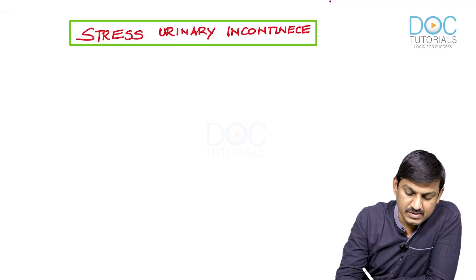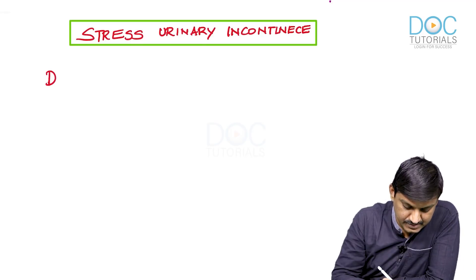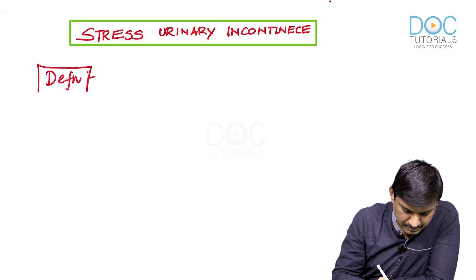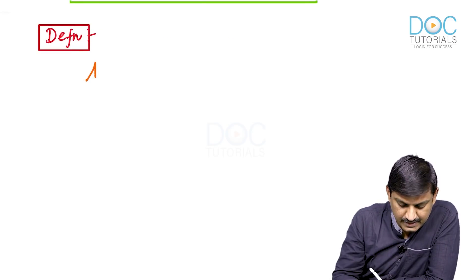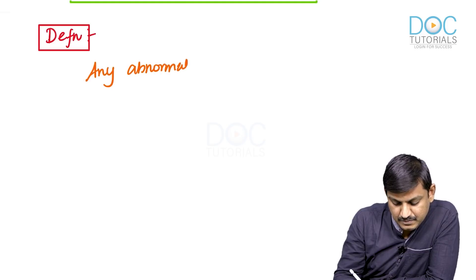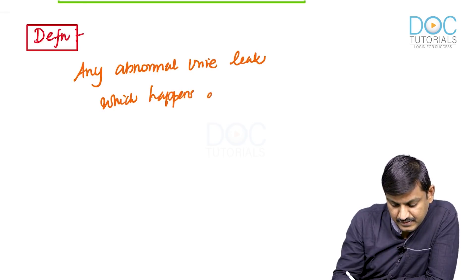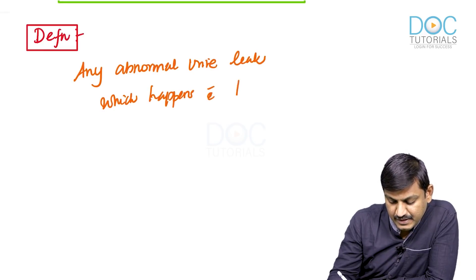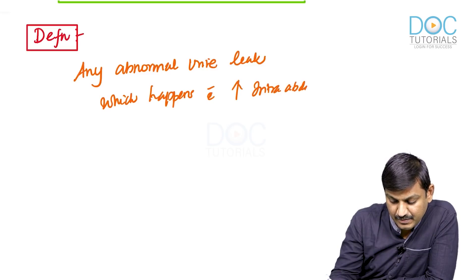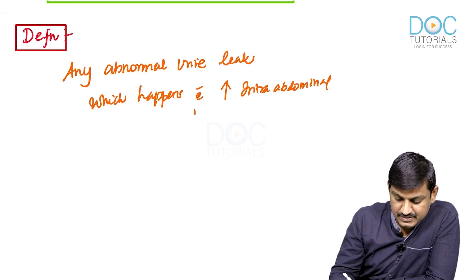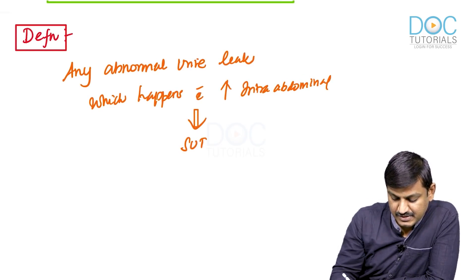We will go into the definition. What is Stress Urinary Incontinence? It is any abnormal urine leak which happens with an increase in intra-abdominal pressure. That is called Stress Urinary Incontinence.